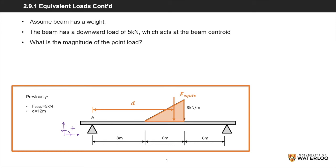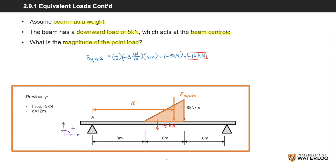We will consider an alternate scenario with the same right triangle, same distances and forces, but adding the weight of the beam itself. We assume the beam generates a downward load of 5 kN acting only at the centroid of the beam. Determine the magnitude of the point load consisting of F-equiv calculated previously and the beam weight. We multiply negative 3 kN per meter by 6 meters and by one half, then add the beam weight. The answer comes out to be negative 14 kN.